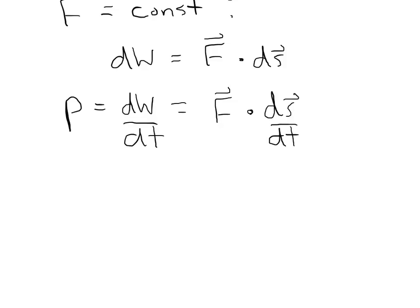And if the force is not constant, then you have to use the chain rule. So it's F dot dS/dt. And that just means that the power is the force dotted with the velocity.